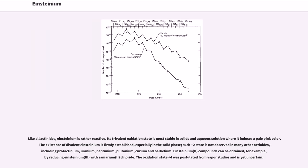Like all actinides, Einsteinium is rather reactive. Its trivalent oxidation state is most stable in solids and aqueous solution where it induces a pale pink color. The existence of divalent Einsteinium is firmly established, especially in the solid phase. Such plus-2 state is not observed in many other actinides, including protactinium, uranium, neptunium, plutonium, curium and berkelium. Einsteinium-2 compounds can be obtained, for example, by reducing Einsteinium-3 with samarium-2 chloride. The oxidation state plus-4 was postulated from vapor studies and is yet uncertain.